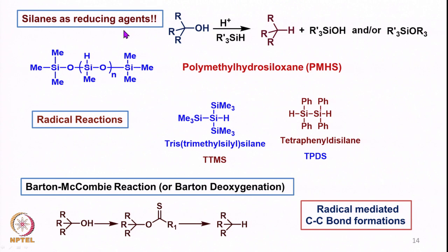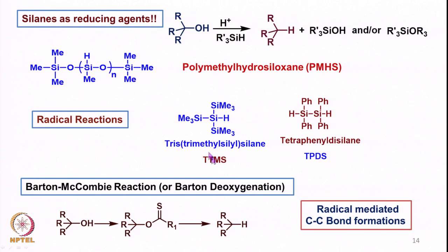Then we looked at reducing agents such as silanes of different kinds, like trialkylsilanes, which reduce an alcohol to the corresponding hydrocarbon under acidic conditions by protonation to generate a carbocation followed by reduction. In that context we also saw the utility of polymethylhydrosiloxane (PMHS). In that context, radical reaction, C-C bond formation, and deoxygenation — also known as Barton deoxygenation — were covered, along with many C-C bond formations using tributyltin hydride and tris(trimethylsilyl)silane or tetraphenyldisylane.